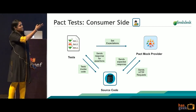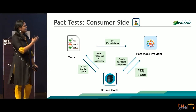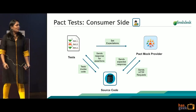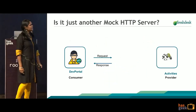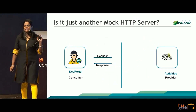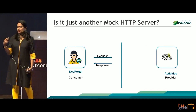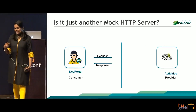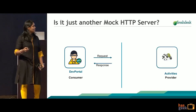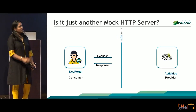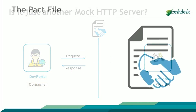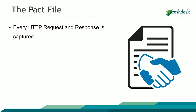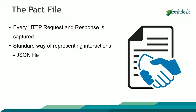But how is it actually different from the usual unit tests? What actually happens is: all the tests that are run on the consumer side get recorded in the background — all this is done by the PACT tool — and it gets written into a file called the PACT file. The PACT file is actually a collection of all requests and responses between two services, and it is nothing but a JSON file.